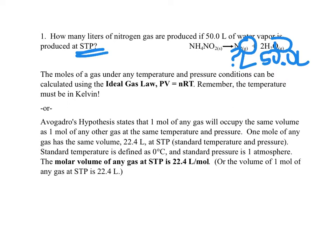You might remember something from Unit 2 called the Ideal Gas Law, or PV=nRT. There's a relationship between volume and moles in the Ideal Gas Law. We can have any set of temperature and pressure conditions to substitute in. Remember, temperature has to be in Kelvin, and the R value is the universal gas constant, which you look up based on your pressure and volume units. That's one option when you're working with moles and gas volume.